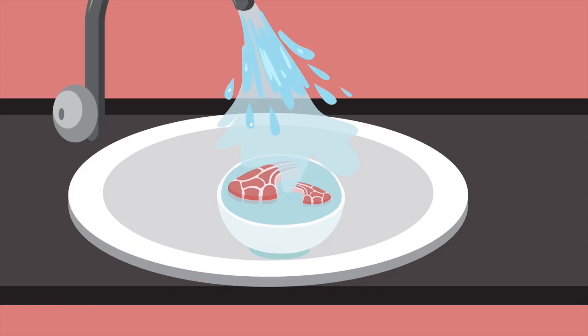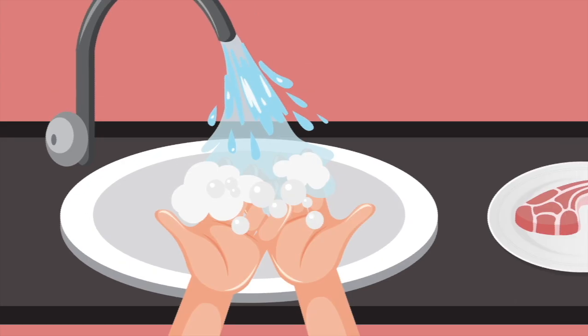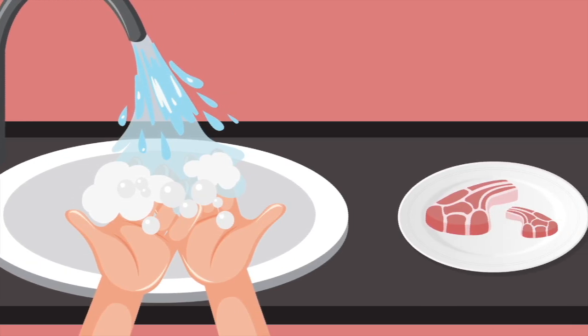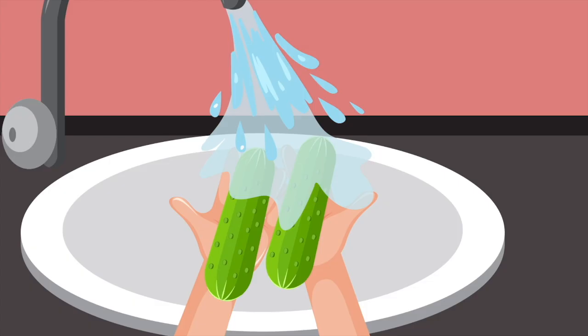Number 4. Wash meat before cooking and wash your hands after handling raw meat. Washing meat and cooking it gets rid of many germs. Number 5. Always wash vegetables and fruits before eating.